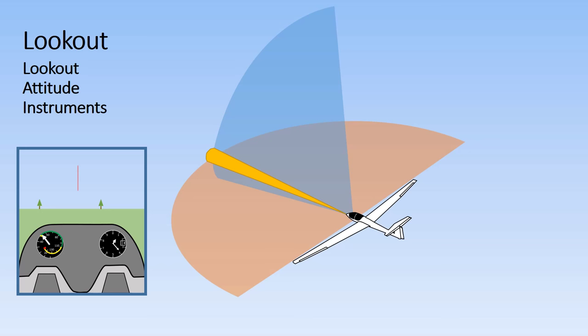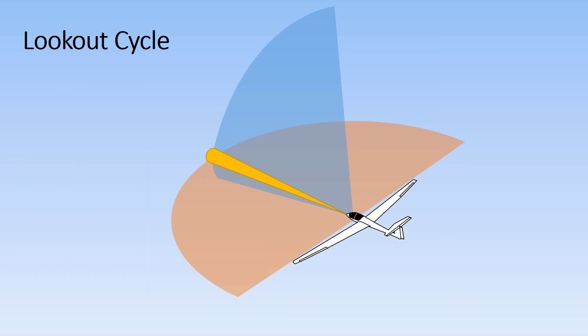The lookout cycle includes three components: lookout, checking the attitude and checking the instruments, and should be done both frequently and regularly. The ideal lookout cycle starts by looking over the nose, then 45 degrees to one side and 90 degrees to one side, or as far around as is possible to look.